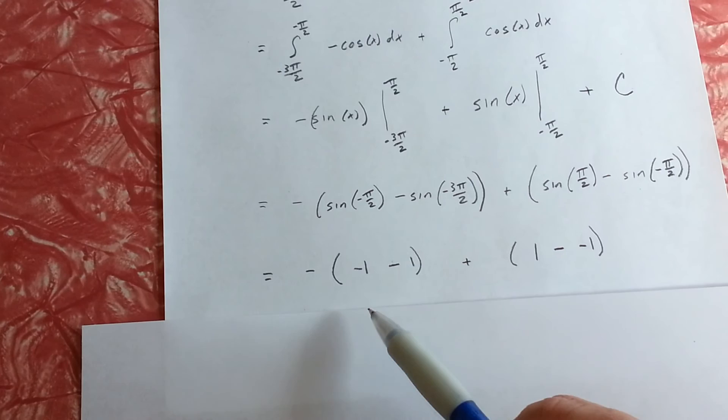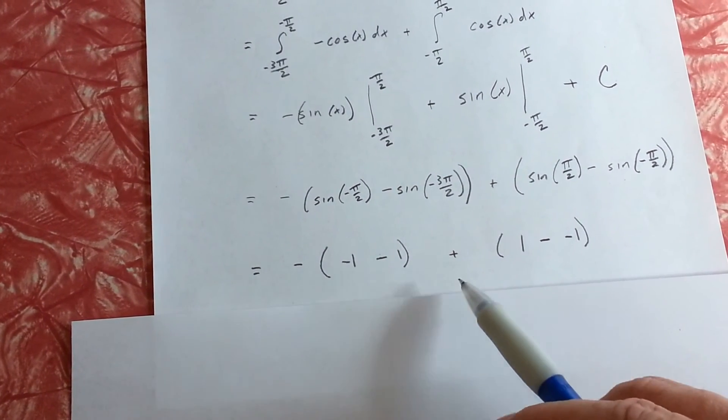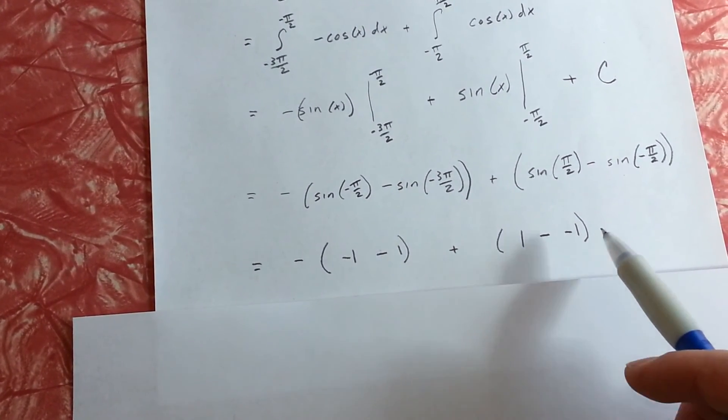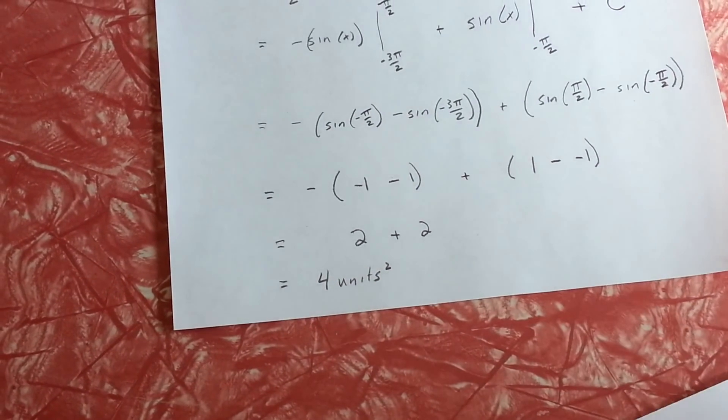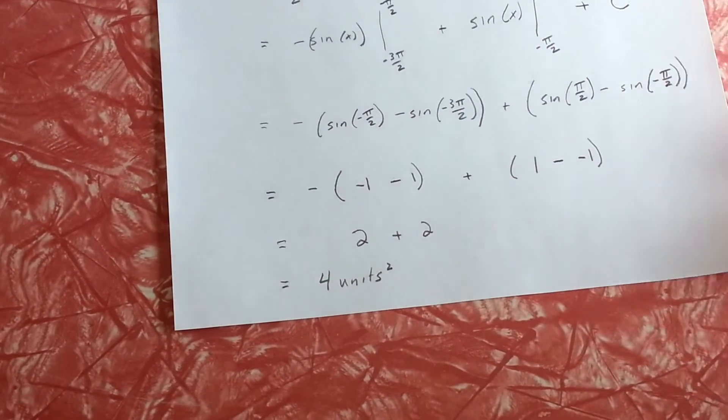Put that into numbers: we've got negative of negative 1 minus 1, plus 1 minus negative 1. This comes out to 2 plus 2, and our final answer is 4 units squared since we're looking for area.